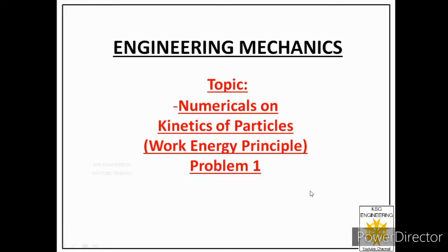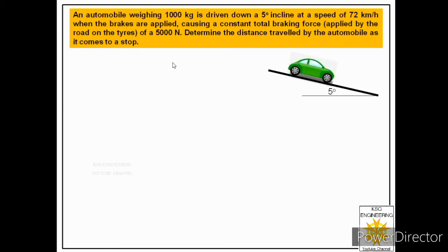Welcome students. Today we will solve a problem on kinetics of particles based on the work-energy principle. We are given a statement: an automobile weighing 1000 kilograms is driven down a 5 degree incline at a speed of 72 kilometers per hour when the brakes are applied, causing a constant total braking force of 5000 Newtons. Determine the distance traveled by the automobile as it comes to a stop.